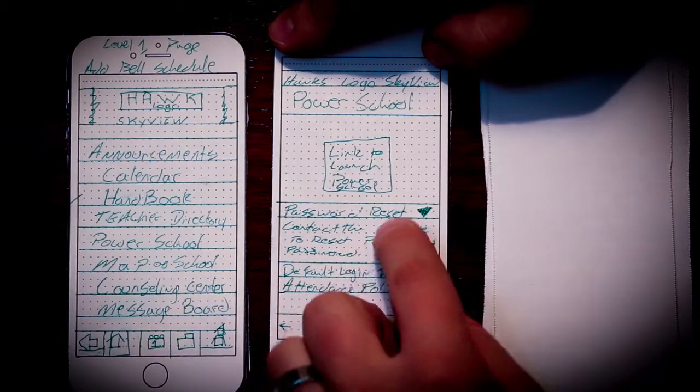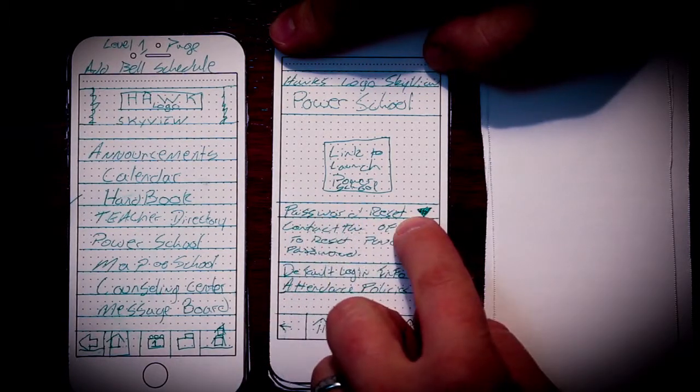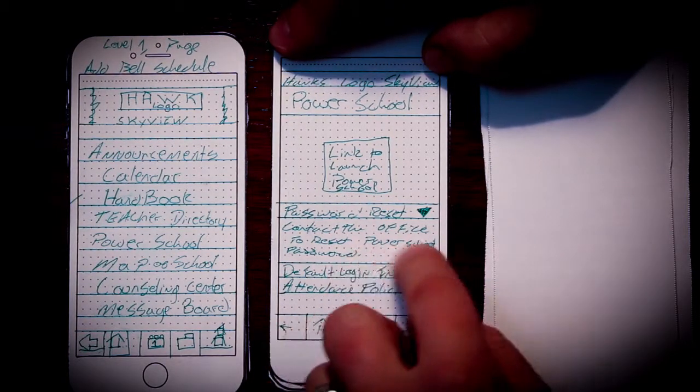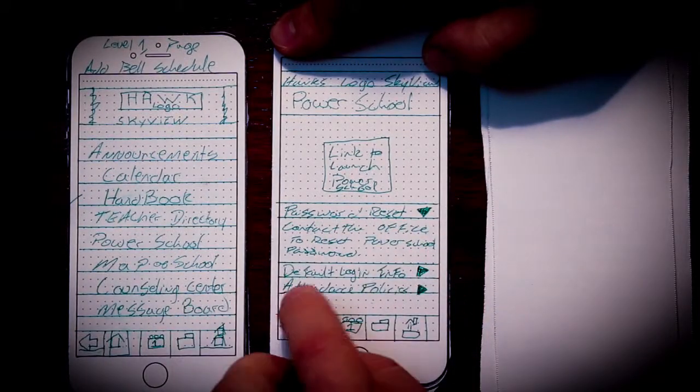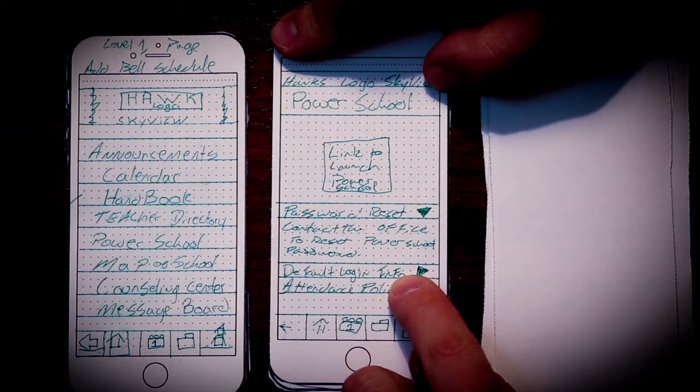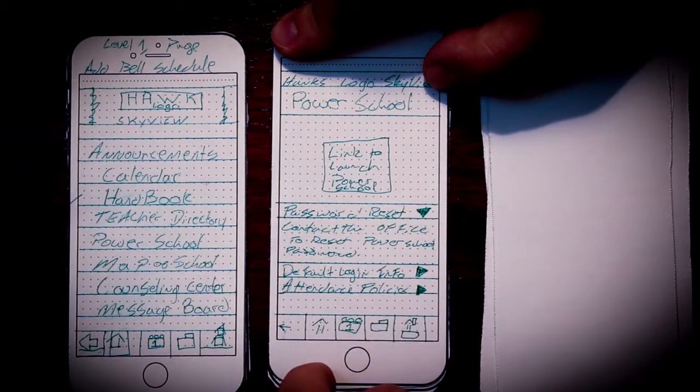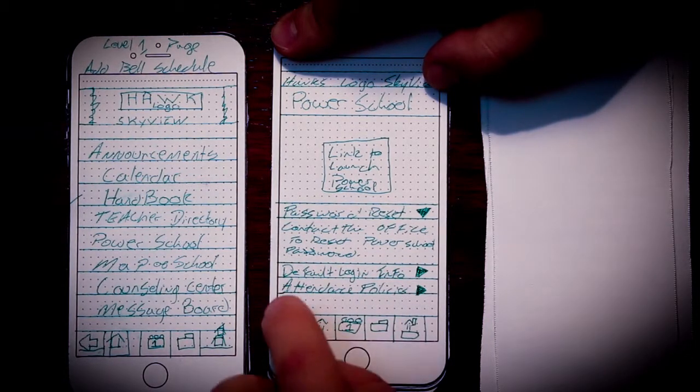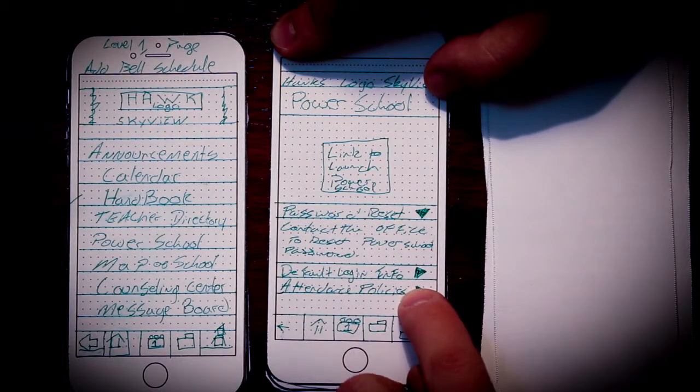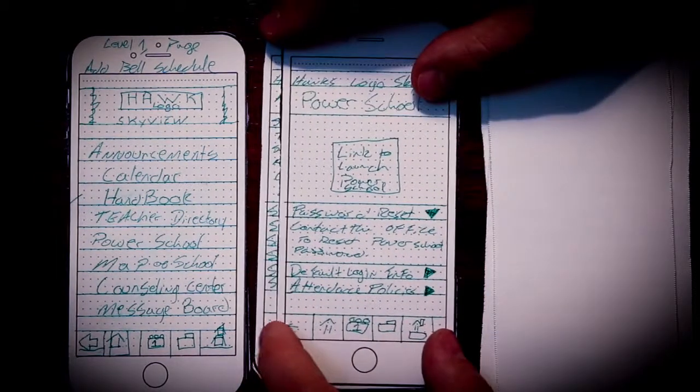But information we included here was about password resets, how they could get that fixed. Possibly there would be a form later that they could hit a button here to open it up and send a thing for a reset. Default login information. So if they needed that, possibly maybe that needs to be out because of a security issue. I'm not sure. And then maybe some PowerSchool-related things like attendance policies or grading policies could go in here as well.